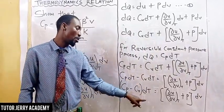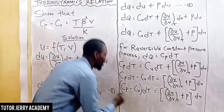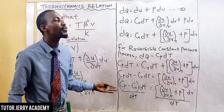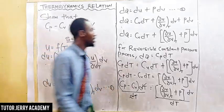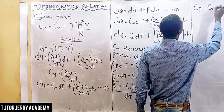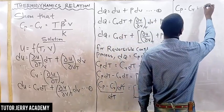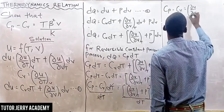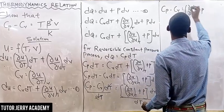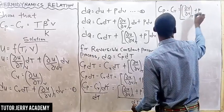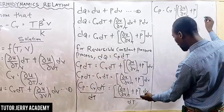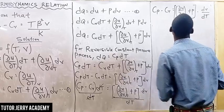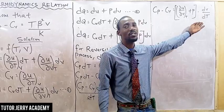Dividing through by dT, we are left with Cp minus Cv equals the partial derivative of u with respect to V, keeping T constant, plus P, multiplied by V over T. Now I can write this in the form of a partial differentiation.